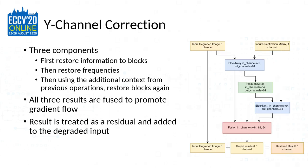To do the Y-channel correction, we use both of these ideas in a three-block process. We first restore information in the DCT blocks, then we restore the frequencies, and then using the context from those two sub-networks, we restore from blocks again. The final result is made by fusing the output of all three sub-networks, with the goal of improving gradient flow.